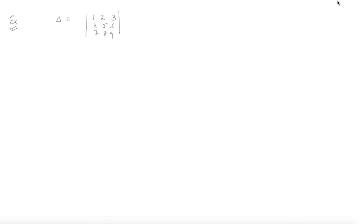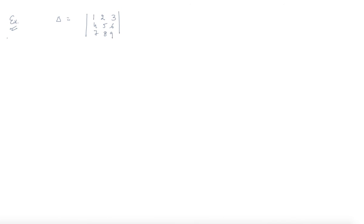I am taking the same example that we discussed in case of minor. Now we will find out A_23. In this case the formula will be minus 1 to the power i plus j times M_ij.